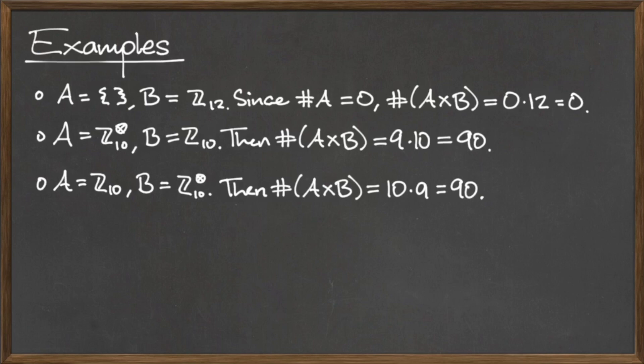For the second example, the cardinality of the Cartesian product A cross B is equal to 90, since the cardinality of set A, which is Z mod 9, is 9, and the cardinality of set B, which is Z mod 10, is 10. So the cardinality of the cross product is 9 times 10, which is 90.